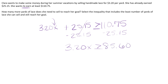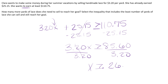Now I've got to break apart that multiplication — the $3.20 times x — so I'm going to divide both sides. And x is greater than or equal to 26.75. So she has to sell at least 26.75 yards of lace to reach her goal.